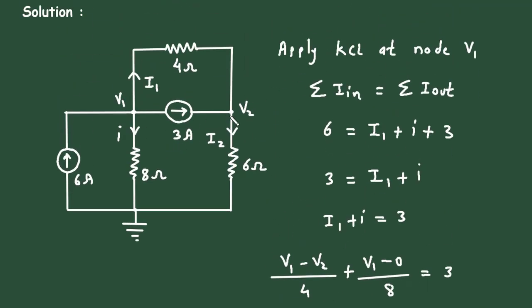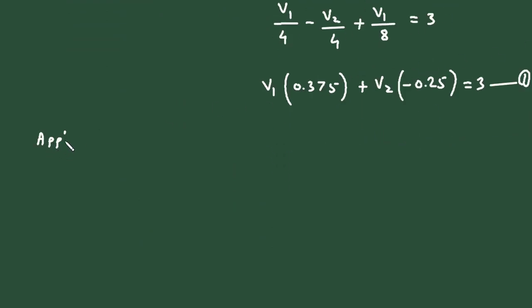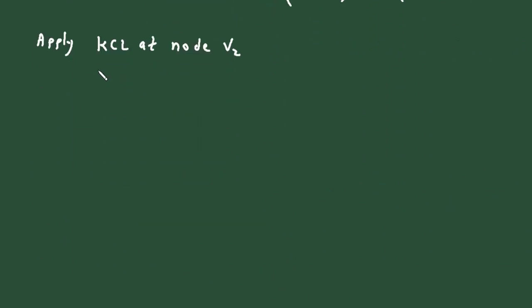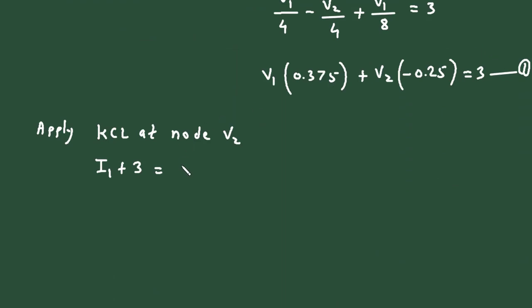Now we will apply KCL at node V2. According to KCL, summation of all the currents entering a node equals summation of all the currents leaving the node. Here the entering currents are I1 plus 3, and I1 plus 3 equals the leaving current I2.